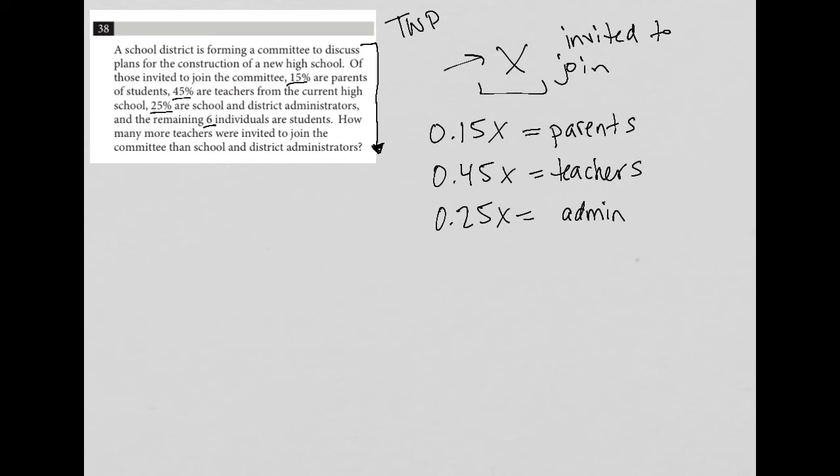And the remaining six individuals are students. Okay, so here's the key to the question. How much more do we have from a percentage standpoint? Remember, we're trying to get up to 100 percent. So we have 0.15 plus 0.45 is 0.6, 0.6 plus 0.25 is 0.85.